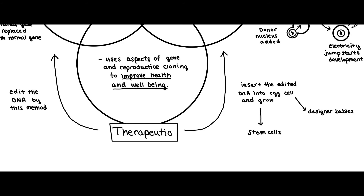Another controversial idea with therapeutic cloning is the concept of the designer baby. For example, I could pay scientists a large amount of money to edit my DNA so that my baby will have a specific characteristic. That DNA could then be inserted into one of my egg cells and grown, resulting in a designer baby where I chose the characteristics. This raises ethical questions — should I be designing my own baby? Is it right or wrong? Additionally, what if I used CRISPR and cloning techniques to ensure my baby didn't have a genetic disease? For example, if I know that Down syndrome runs in my family, is it right for me to edit my DNA to ensure my child does not have Down syndrome?